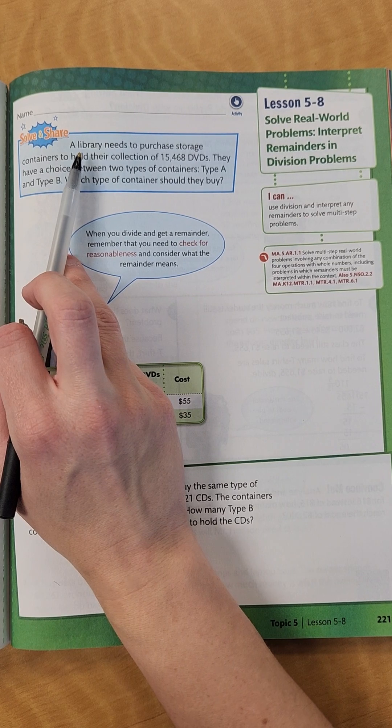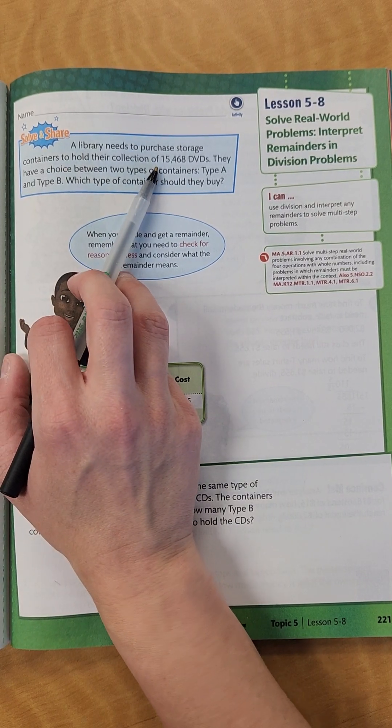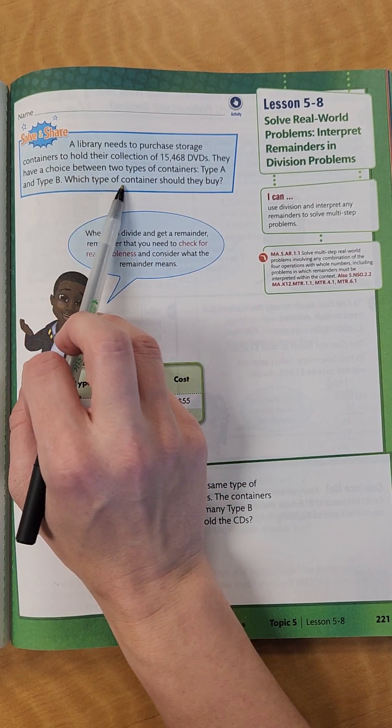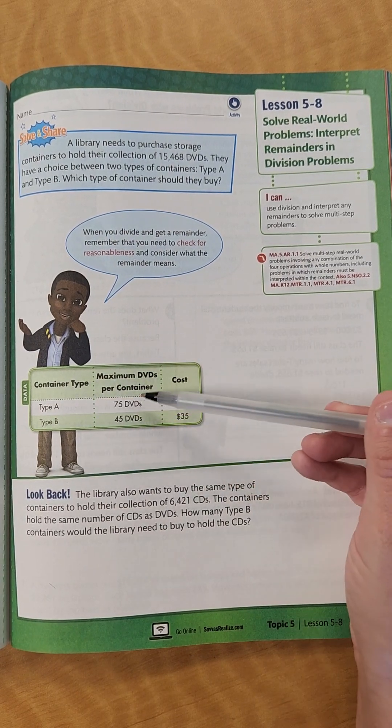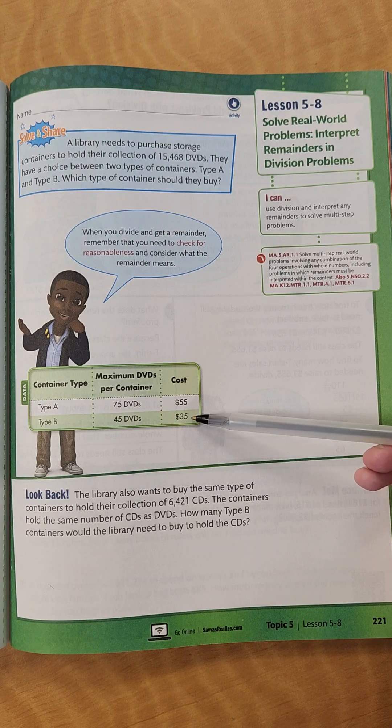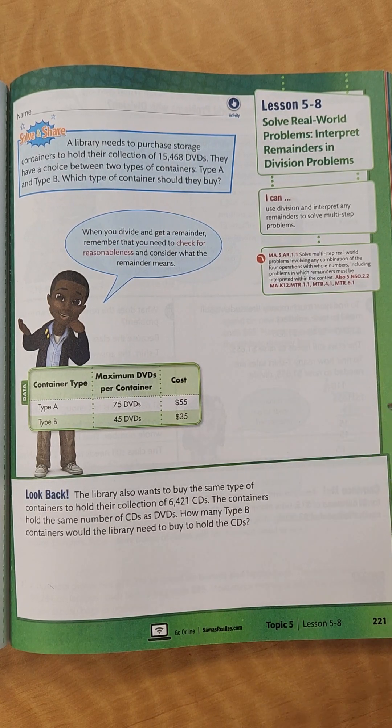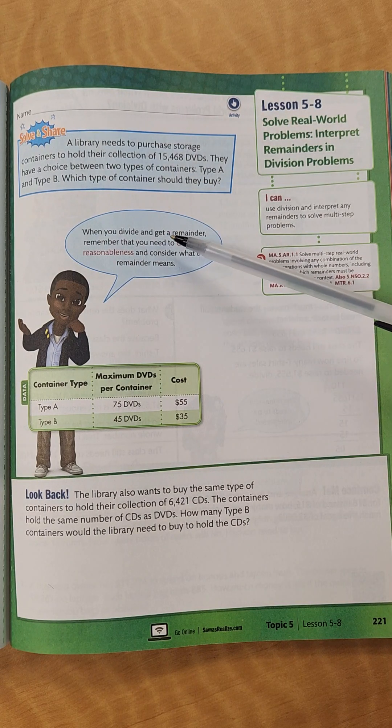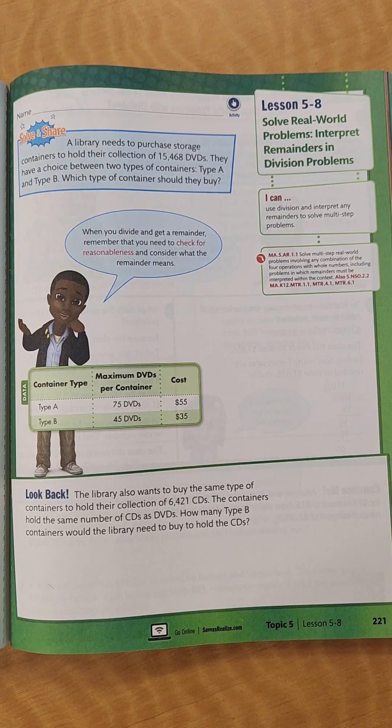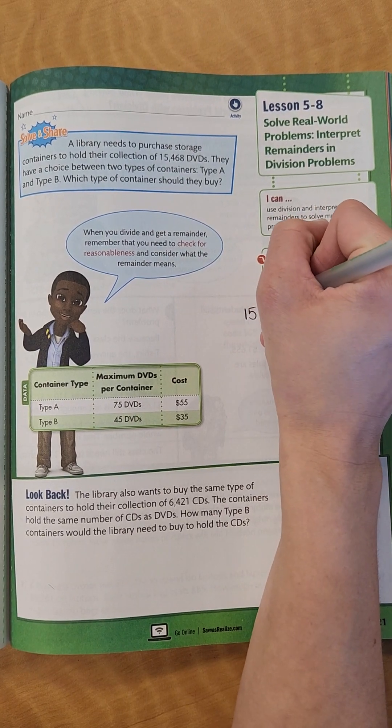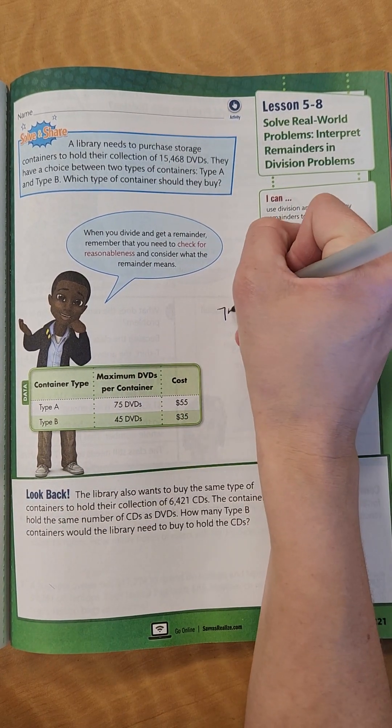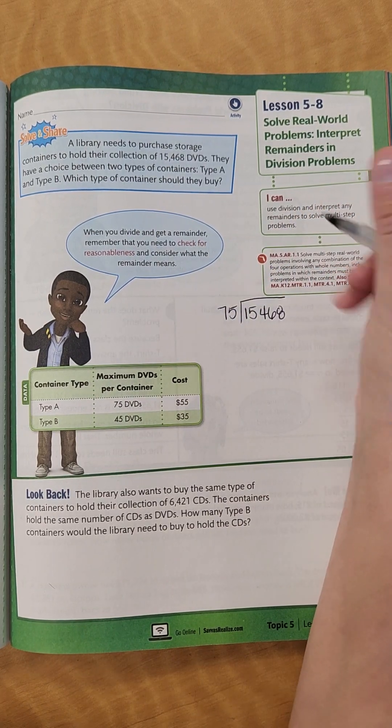Let's start with this problem. It says, a library needs to purchase storage containers to hold their collection of 15,468 DVDs. They have a choice between two types of containers, Type A and Type B. Which type of container should they buy? The table shows Type A holds 75 DVDs and costs $55, and Type B holds 45 DVDs but costs $35. So we need to figure out which one is going to be the best for this library to buy.